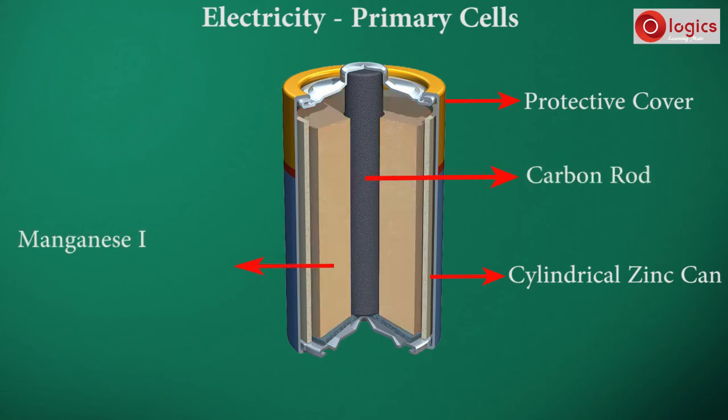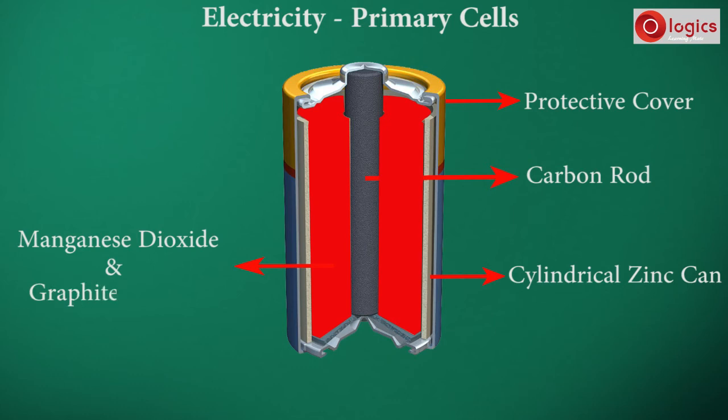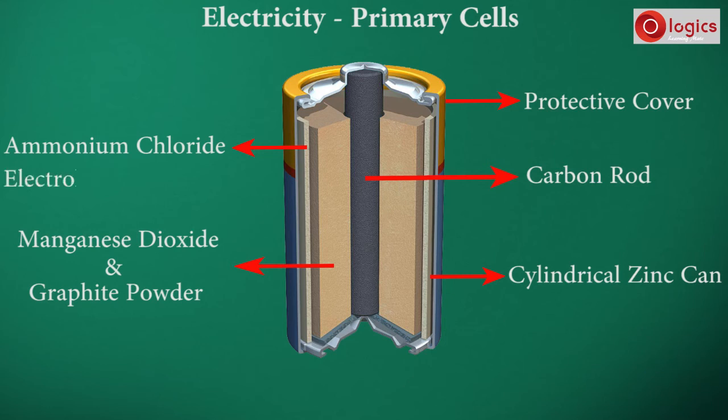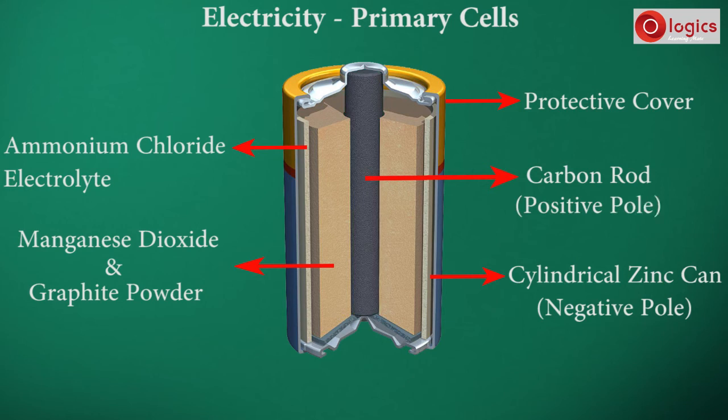A thick paste of manganese dioxide and graphite powder is packed around the carbon rod. A thick paste of ammonium chloride is packed around the zinc can and acts as an electrolyte. The zinc can acts as negative pole, and carbon rod acts as positive pole. This is the negative terminal of the cell, and this becomes positive terminal of the cell.